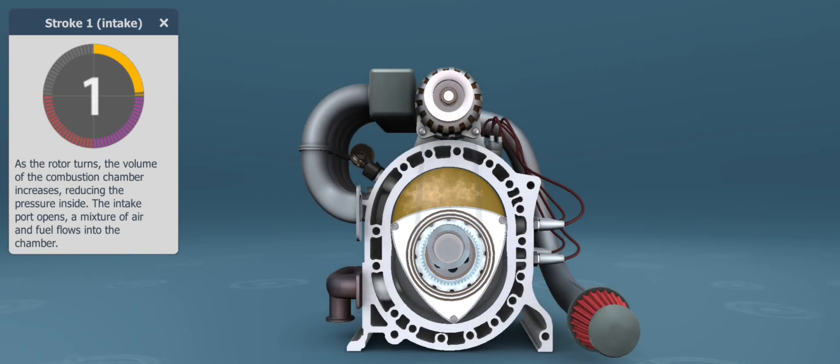As the rotor turns during the first stroke, the volume of the combustion chamber increases, reducing the pressure inside. This is why air flows into the chamber and the injector injects petrol into the combustion chamber.